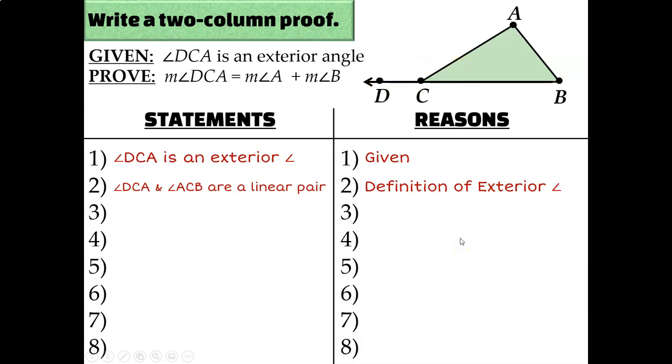Okay, what do I know about linear pairs? I know that they're supplementary because of the linear pair postulate. So instead of just saying that those two angles are a linear pair, I can say that they're supplementary.